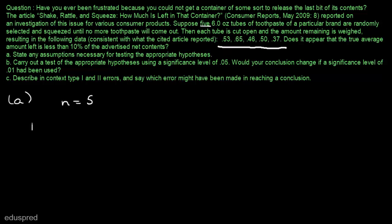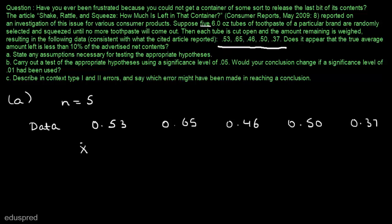Our data is 0.53, 0.50, and 0.37. Using this data, we can find the value of sample mean, which I am denoting by x-bar, and the value of sample standard deviation, which I am denoting by s. In part a, we have been asked if there are any assumptions necessary for testing the appropriate hypothesis.